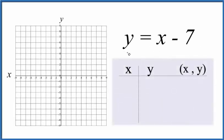Let's graph the linear equation y equals x minus seven. We're going to do this with a table of values. The first thing we want to do is put a value in for x, do the math, and see what we end up with for y.